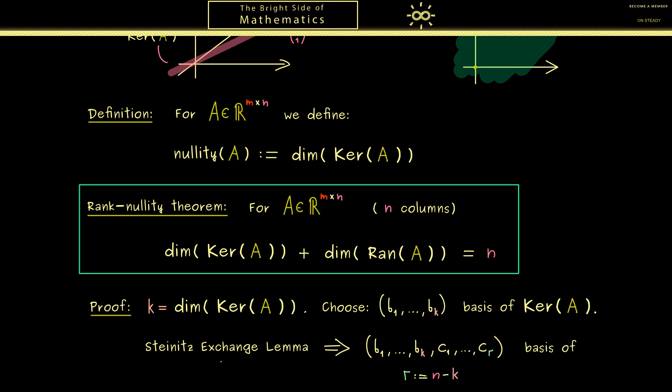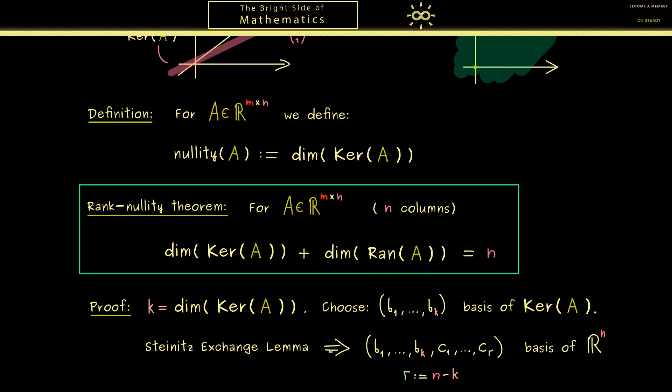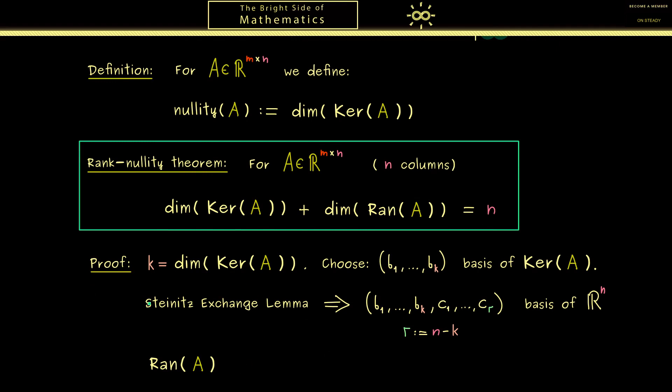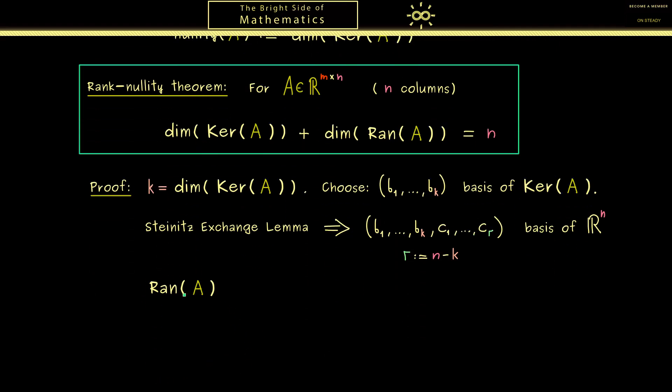So we add n minus k vectors, we call c_i. And in order to make the whole thing a little bit nicer, let's numerate them from c_1 to c_r. Hence, lowercase r simply stands for n minus k. Okay, there you see, with Steinitz's exchange lemma, we get a basis with n vectors, so a basis of R^n. Essentially, the idea here is very simple. We have some directions in R^n, and we just add the missing ones. Moreover, also please note here, it can definitely happen that r is equal to zero, which means we don't have to add anything. However, in all the other cases, we have to do a little bit more. Indeed, what we need to show now is that the dimension of the range of A is equal to our r here. Because then, we can conclude from r plus k is equal to n, our rank-nullity theorem.